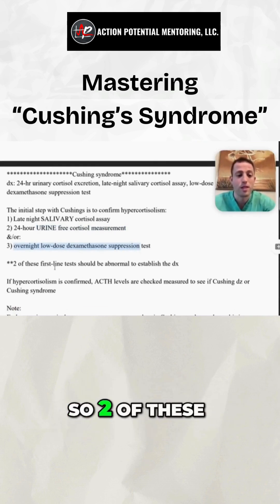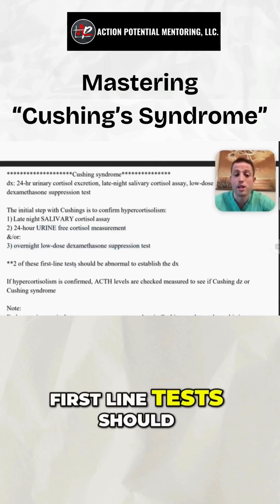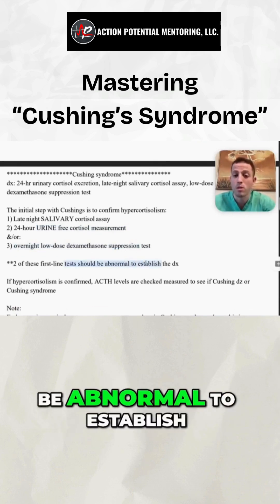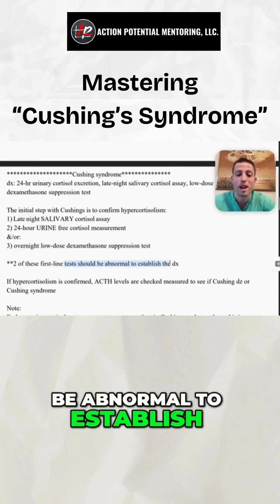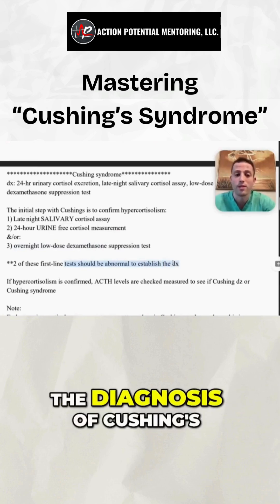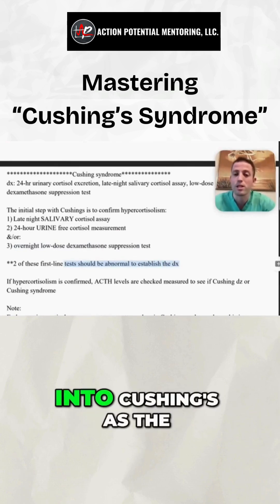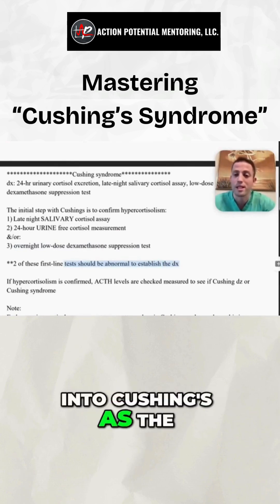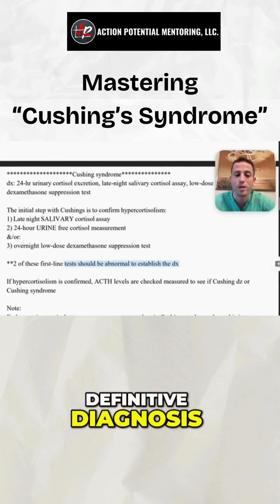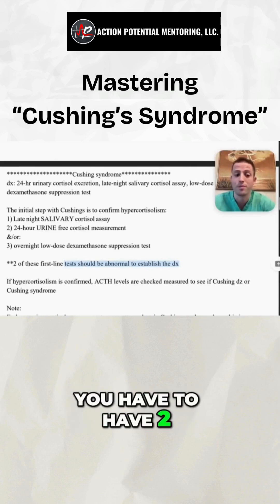Two of these first-line tests should be abnormal to establish the diagnosis of Cushing's. If only one is abnormal, that doesn't give you a definitive diagnosis — you have to have two.